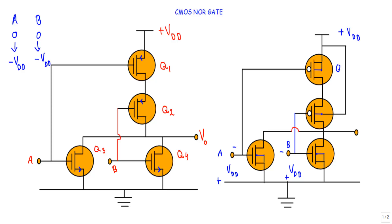We are applying a negative voltage at the gate terminal of Q1, which is a P-type MOSFET, so Q1 will be in the ON state. Q2 also receives a negative gate voltage so it will also be ON. We are applying negative voltage at the gate of Q3, which is an N-type MOSFET, so it will be in the OFF state. Q4 also receives negative voltage and is also N-type, so it will be OFF. We take the output from the common drain point.